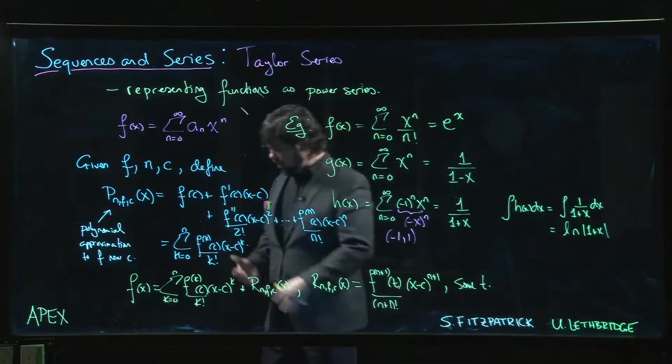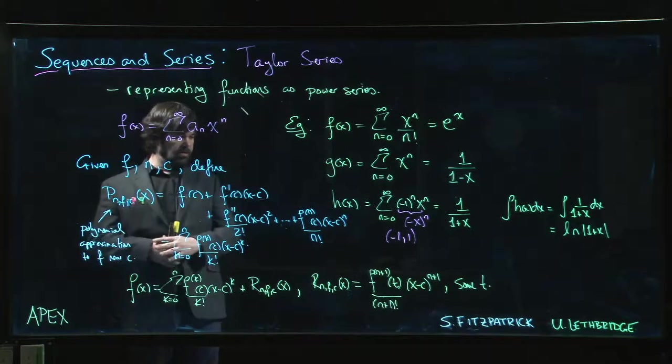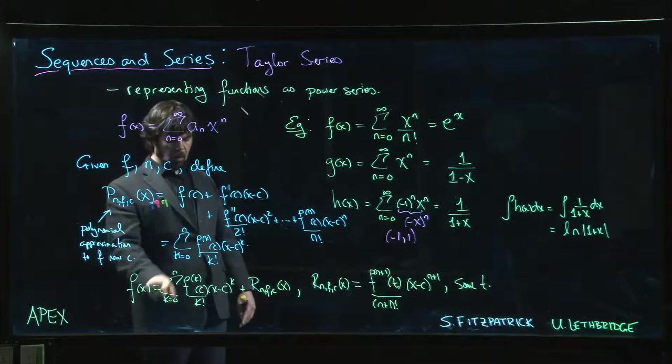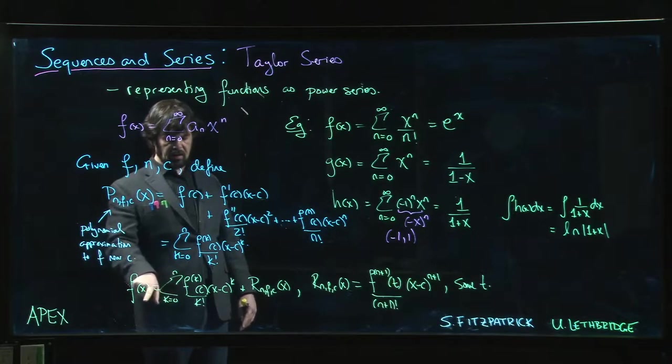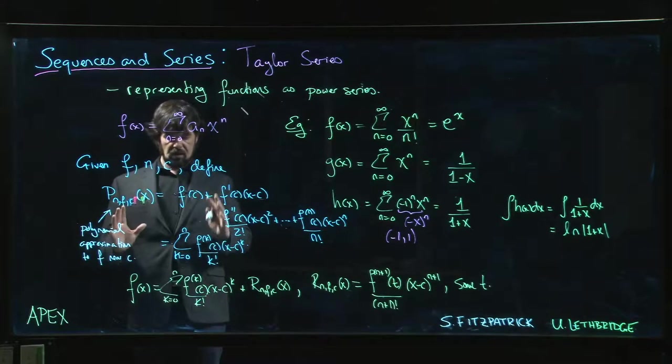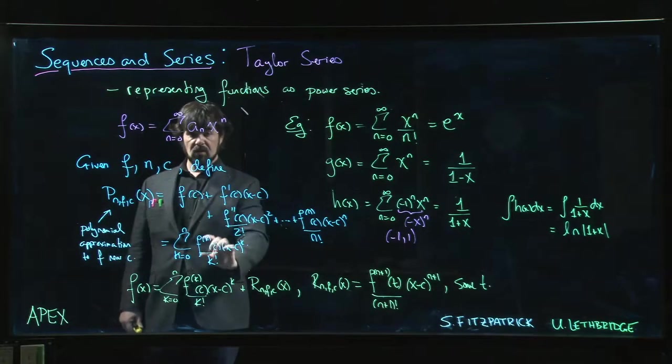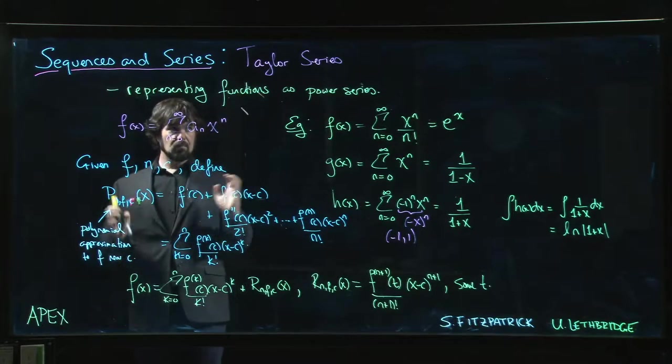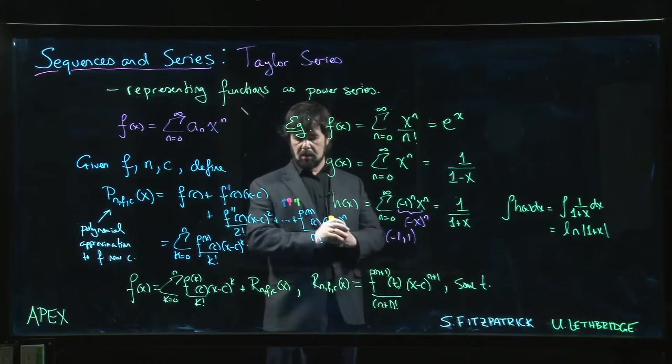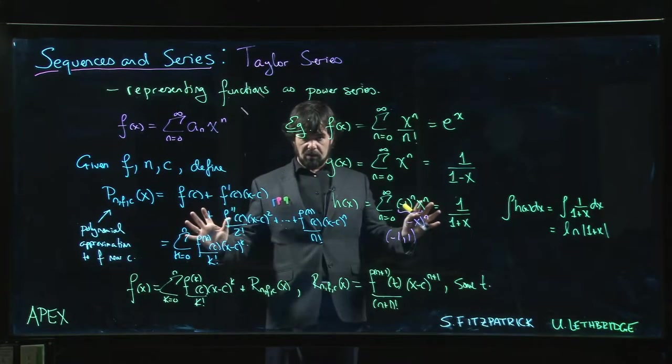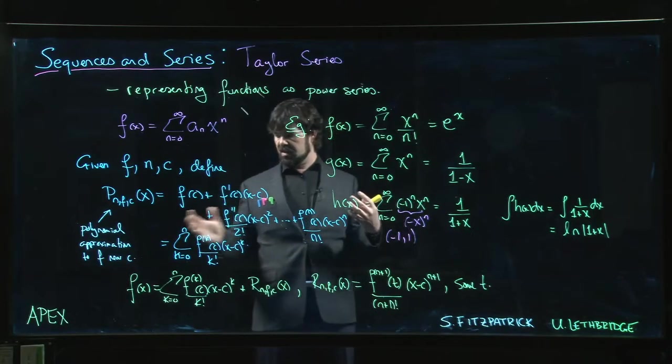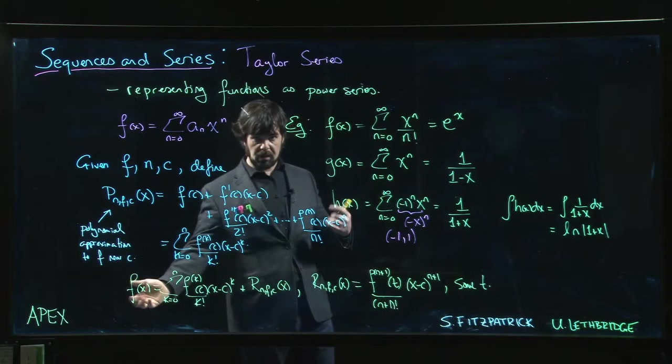Then the idea is you might say, well hey, maybe if I let n go to infinity, that remainder goes to zero, and then this actually becomes equality. I just have to let n go to infinity here, and then I will actually have f(x) equal to a power series where the terms in the power series are computed using Taylor's formula. And that's exactly what you get—that is a Taylor series. A Taylor series is basically what you get if you take a Taylor polynomial and you let n go to infinity. What we want to study are the conditions under which that Taylor series is exactly equal to the function you started with.